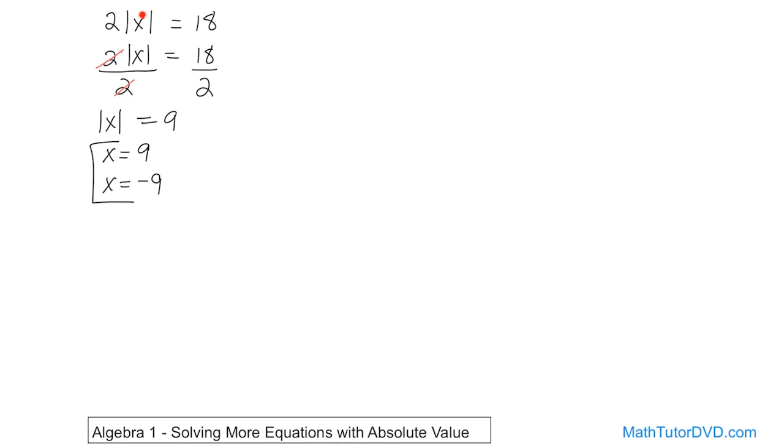That's because if you put 9 here, absolute value of 9 is 9 times 2 is 18, so it works. If you put negative 9 here, then the absolute value of negative 9 is also positive 9 times 2 gives you 18. So these two values both work and both satisfy the equation.